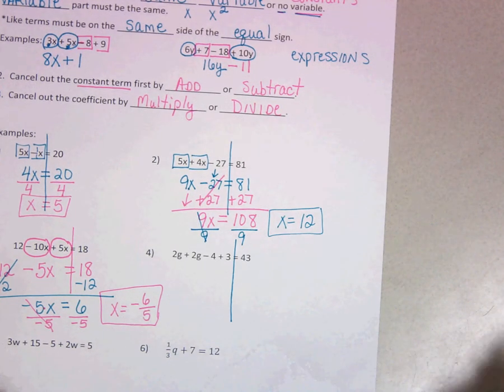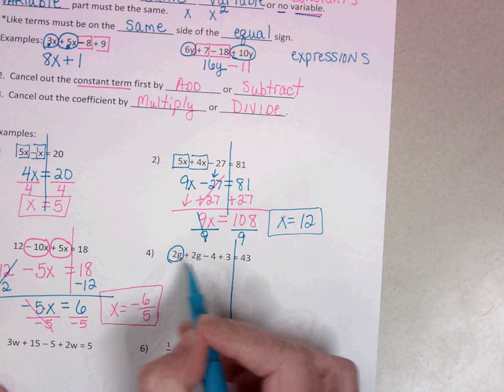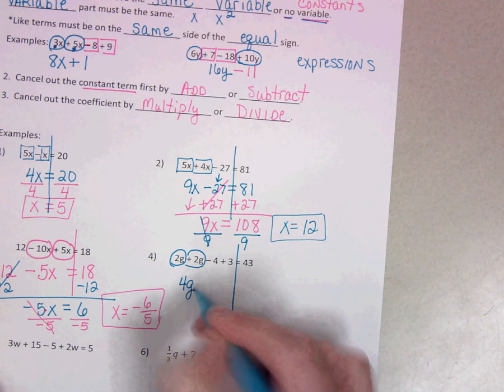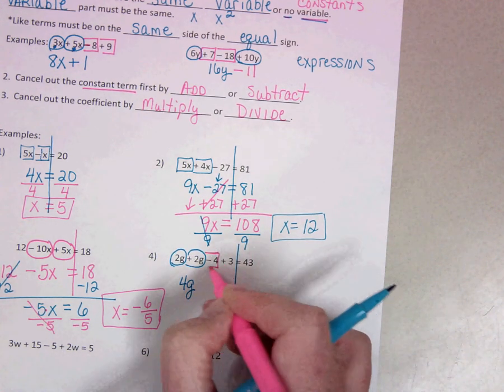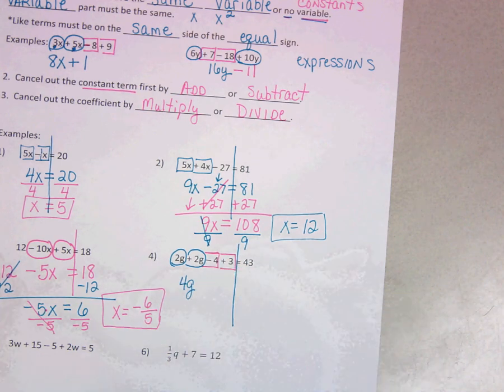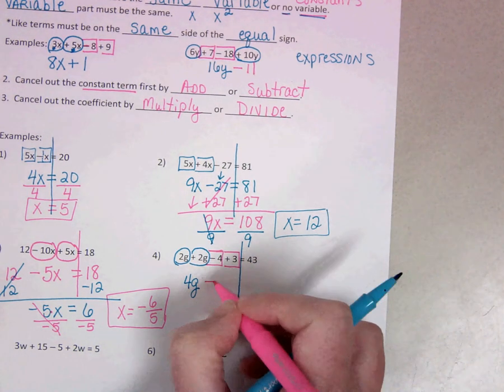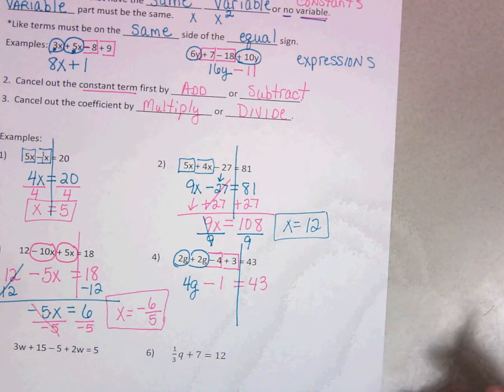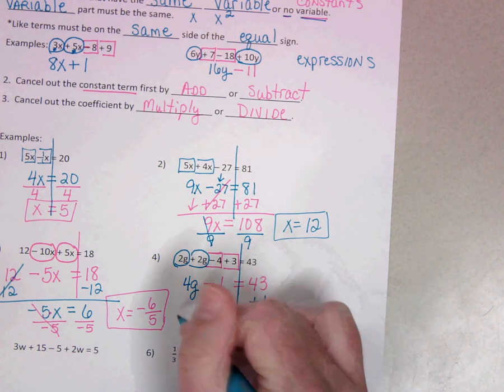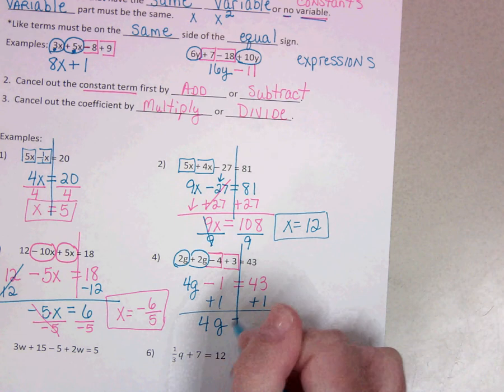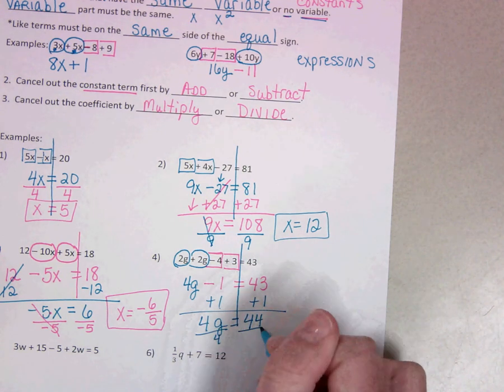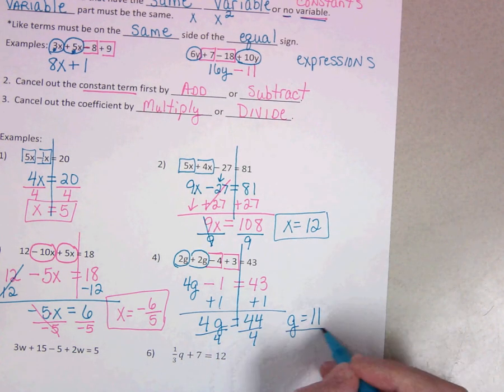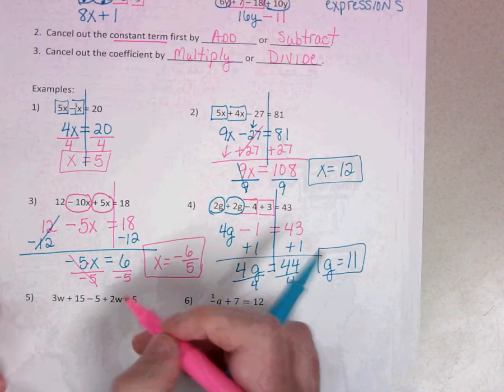The next problem, again, let's look for our like terms. 2g plus 2g is 4g. And then we also have negative 4 and positive 3, which would be negative 1. Combined our like terms. And now again, we're just down to a regular two-step equation. Add 1 to both sides. And then divide by 4. Most of the time, this last step here is going to be division. I'm not going to say always, but most of the time.